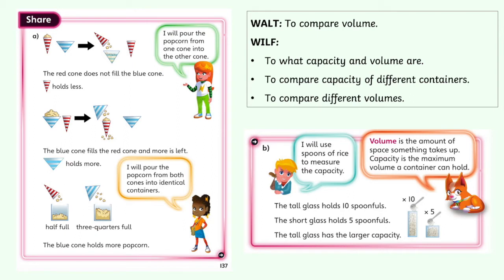Let's think about that first question: how can we find out which cone holds the most popcorn? We've got a few different ways we could have done this. So our first way: with one of the cones empty, we could have poured the red cone into the blue cone. And if we'd done that, we would have seen that the red cone does not fill up the blue cone. We've poured all that popcorn in and it's not quite filled up the blue cone. So we know that the red cone holds less than the blue cone.